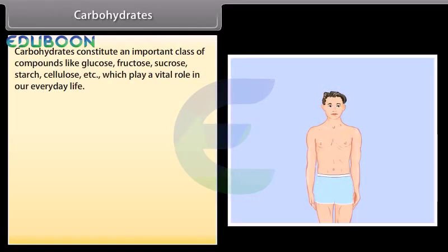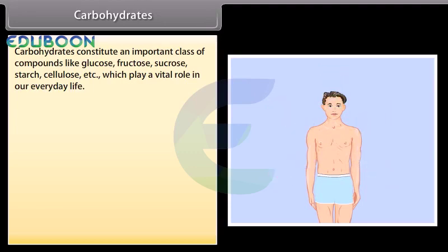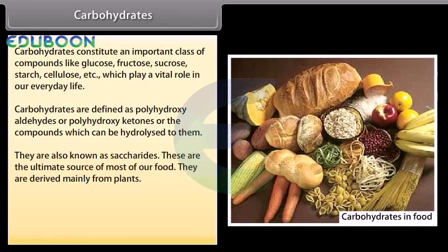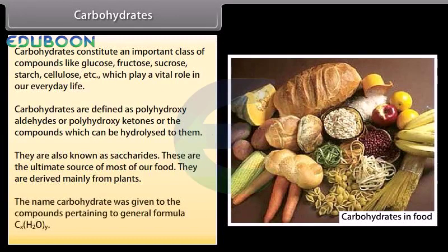Carbohydrates constitute an important class of compounds, like glucose, fructose, sucrose, starch, cellulose, etc., which play a vital role in our everyday life. Carbohydrates are defined as polyhydroxy aldehydes or polyhydroxy ketones, or the compounds which can be hydrolyzed to them. They are also known as saccharides. These are the ultimate source of most of our food. They are derived mainly from plants. The name carbohydrate was given to the compounds pertaining to general formula CxH2Oy.